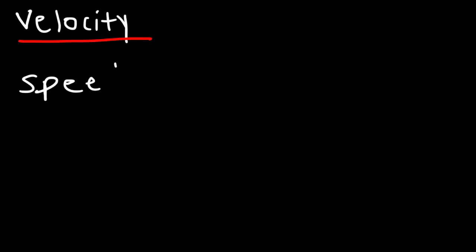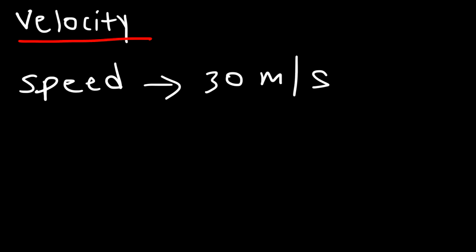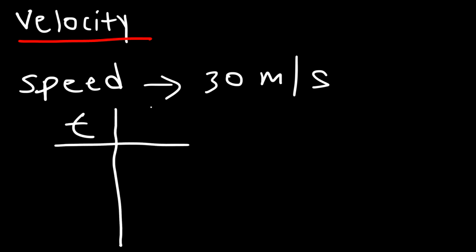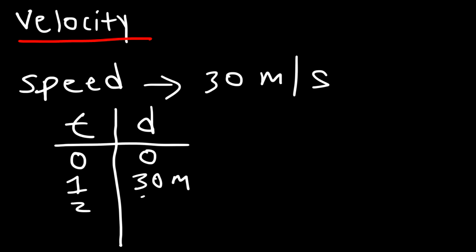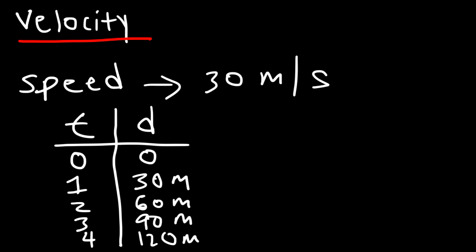Speed tells you how fast something is going. For instance, let's say a car is moving at 30 meters per second — that's the speed. Every second it's covering a distance of 30 meters. If we were to make a table with time and distance traveled: at zero seconds it covers zero meters, one second 30 meters, two seconds 60 meters, three seconds 90. Every second that passes, the distance is increasing by 30 meters. That's the basic idea behind speed.